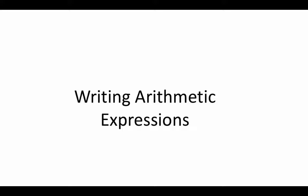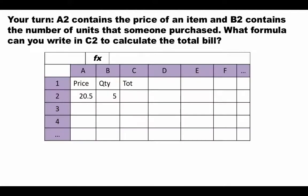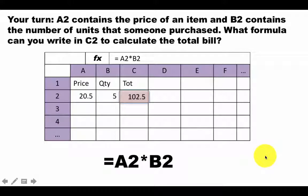Let's take a few examples of how to write arithmetic expressions in Excel. Suppose A2 contains the price of an item and B2 contains the number of units that somebody purchased — for example, the price is $20.50 and somebody bought five units. What formula can you write in C2 to calculate the total bill? Pause the video and write your answer. One way to write this is equals A2 star B2.